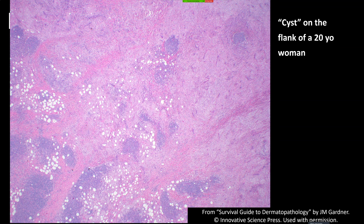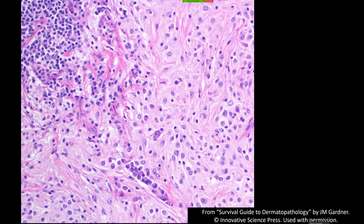At low power, Rosai-Dorfman is the first thought on my mind when I see this. Most cases I've seen are nodules in the subcutis, often on the flank of a 20-year-old woman or young adult. They often get misdiagnosed clinically as a cyst — just like any nodule in the subcutis would. Everything's a cyst until you biopsy it and realize it's DFSP or something else.